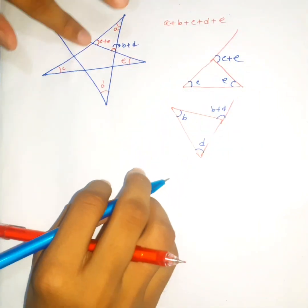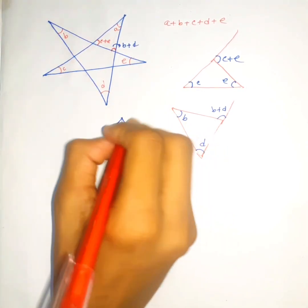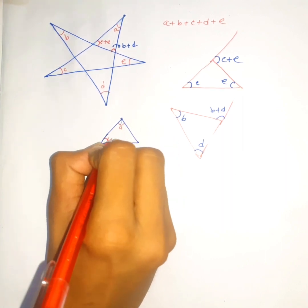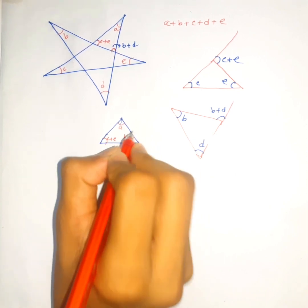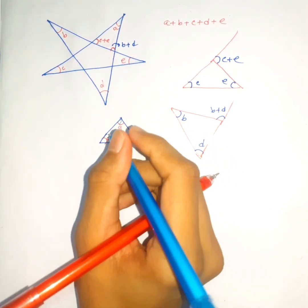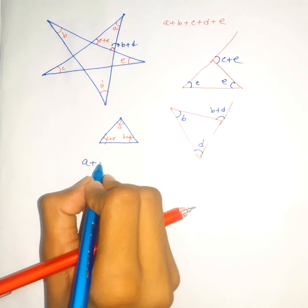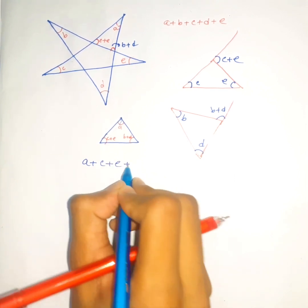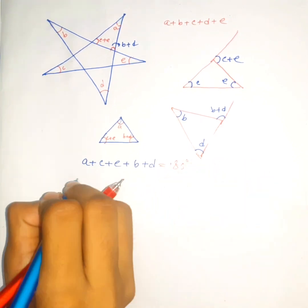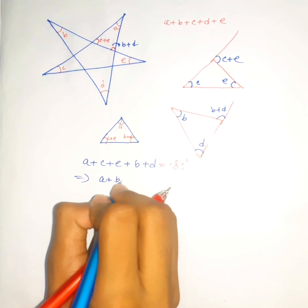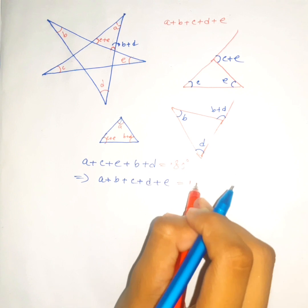Now notice this triangle — let me draw it here. In this triangle, this angle is a, this angle is c plus e, and this angle is b plus d. As you know, the sum of angles in a triangle is 180 degrees, so a plus c plus e plus b plus d equals 180 degrees, or reorganized: a plus b plus c plus d plus e equals 180 degrees.